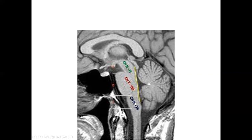You can see the fourth ventricle here. This is the tectum part, this is the tegmentum part, and this is the aqueduct of Sylvius that continues as the fourth ventricle. This is the cerebellar hemisphere.